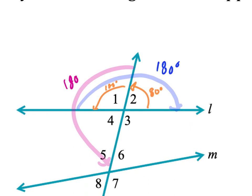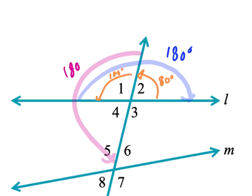So if angle one is 100 degrees, then angle four must also be 80 degrees. Notice that these two are congruent — I'm going to put a tick mark here because that's what a tick mark means: these two angles are congruent. Now if lines l and m were parallel we could say something else, but they aren't parallel. Parallel means the two lines never cross, but these two lines will eventually cross.